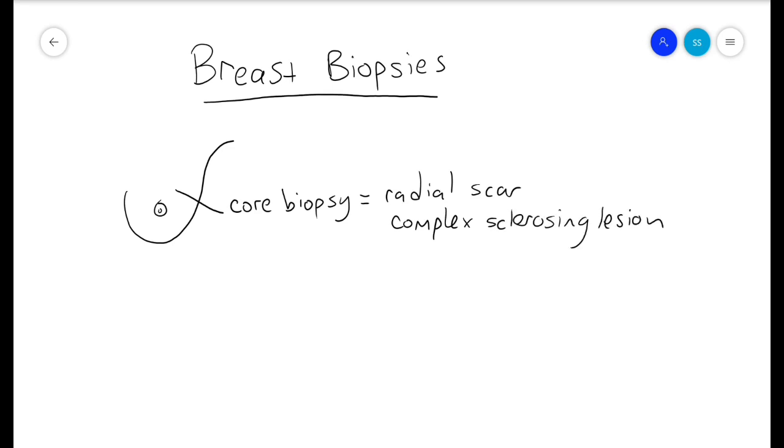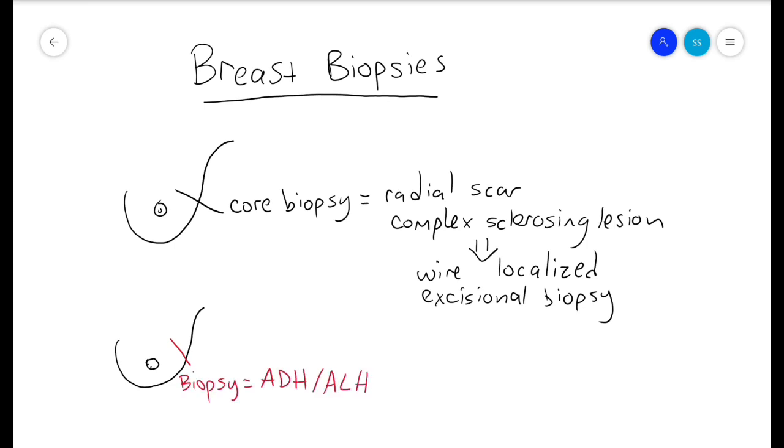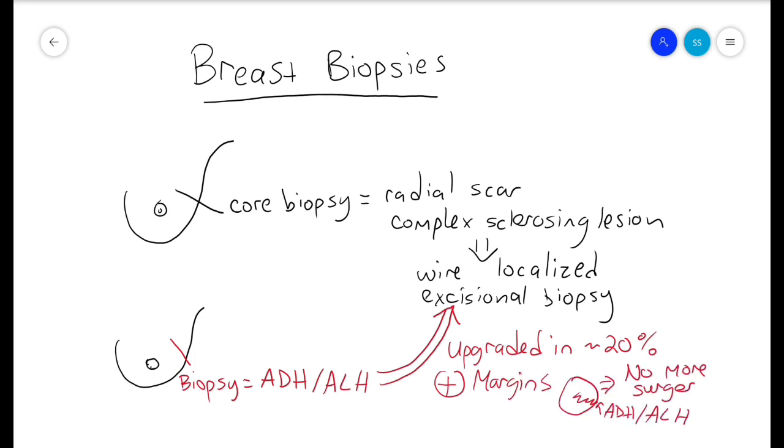Let's talk about findings on biopsy that need something done about them. If a core needle biopsy shows a radial scar or a complex sclerosing lesion, these can mimic breast cancer on mammogram appearance. If found on needle biopsy, they should have a wire localized excisional biopsy to ensure complete sampling. Core needle biopsy showing atypical hyperplasia, whether this is atypical ductal hyperplasia or atypical lobular hyperplasia, should go for a wire localized excisional biopsy. The risk of finding something worse than the ADH or ALH is around 20 percent. If the margins have ADH or ALH, there is no need to resect more and there is no need to radiate.